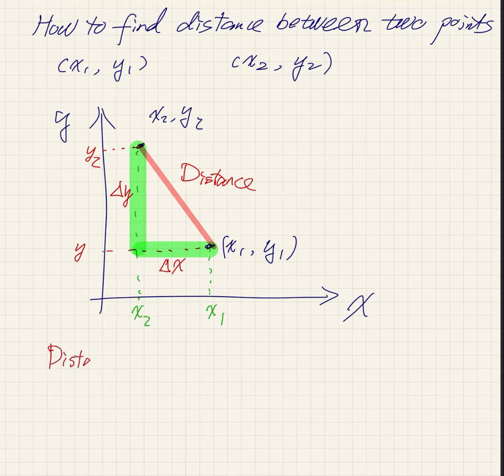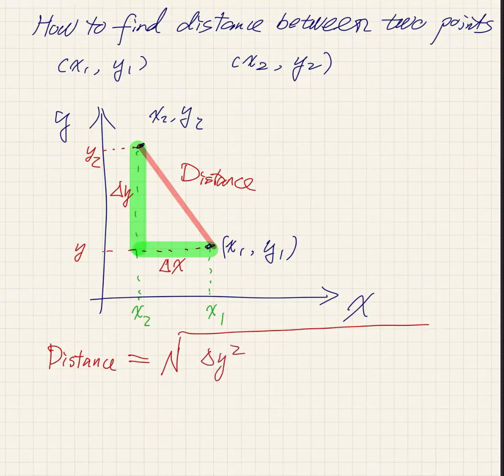We can use the Pythagorean theorem to find the red distance from delta x and delta y. The length of delta x and delta y can be found on their respective axes.